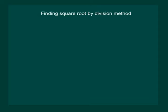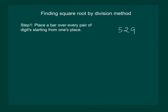Let us take an example and explain step by step the division method. Let us take a number 529. Our first step is to place a bar over every pair of digits starting from the one's place. So we make a pair and we have 5 that is a single digit in the second bar.